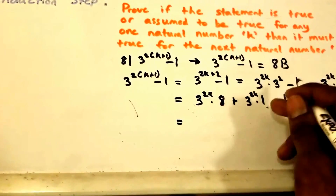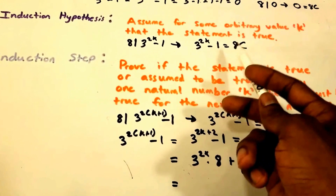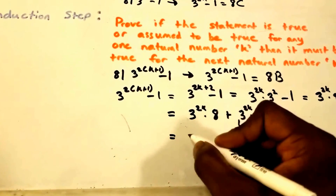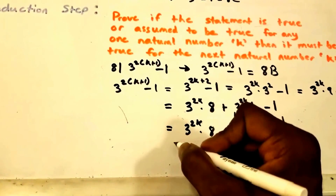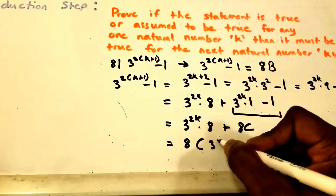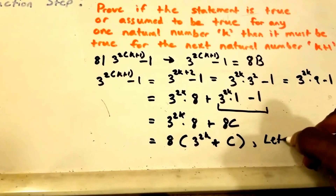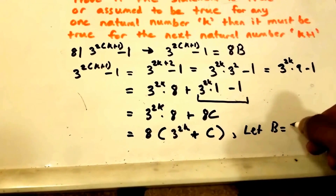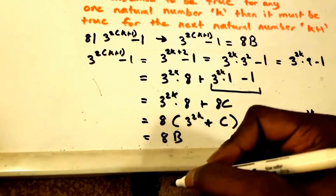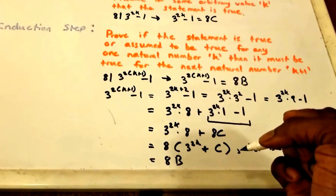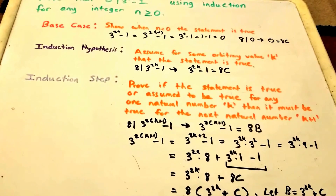Now we can use our induction hypothesis. Our induction hypothesis says 3 to the power of 2K minus 1 equals 8 times some constant C, so we can substitute that in. We get 3 to the 2K times 8 plus 8 times C. Pulling out the 8, we get 8 times (3 to the power of 2K plus C). If we let B equal 3 to the power of 2K plus C, then we get 8 times B, which is exactly what we wanted to show.